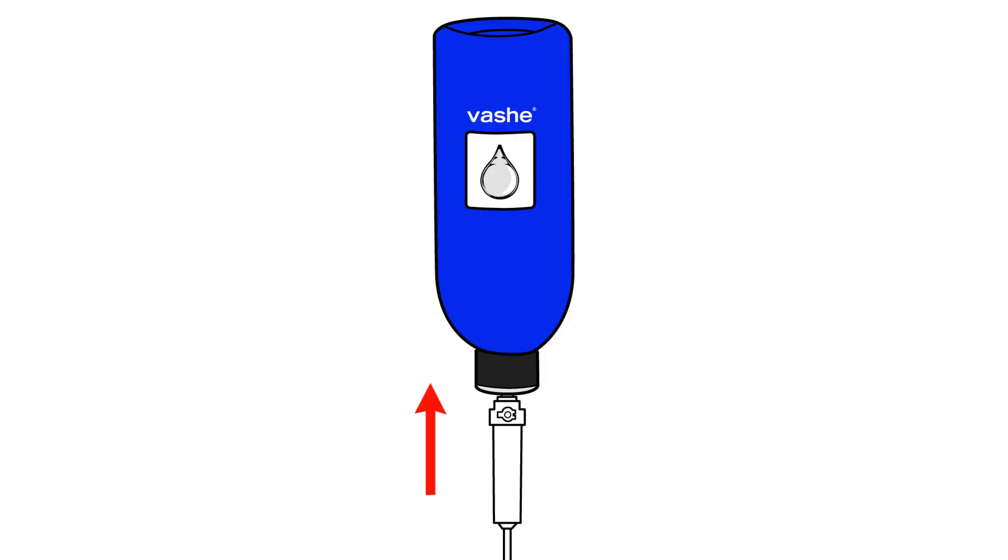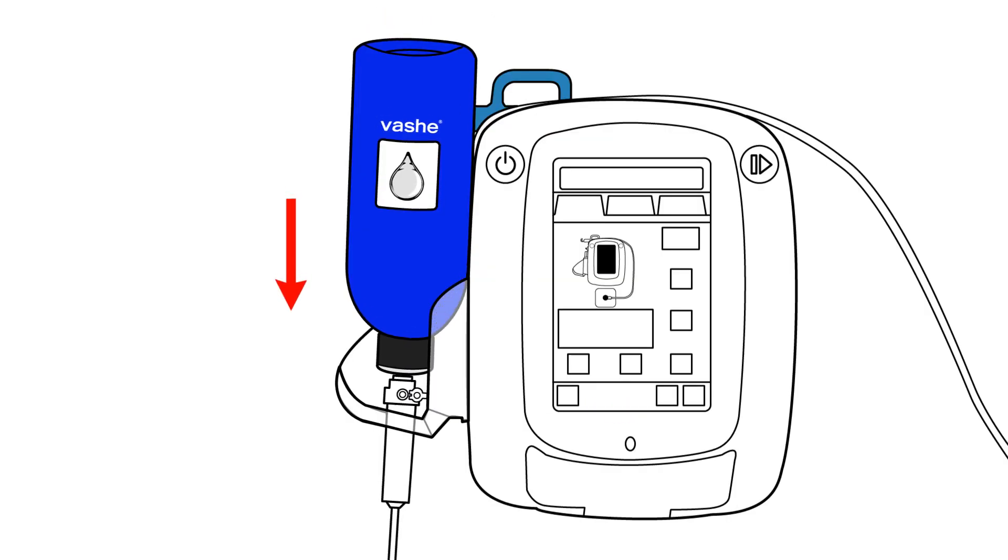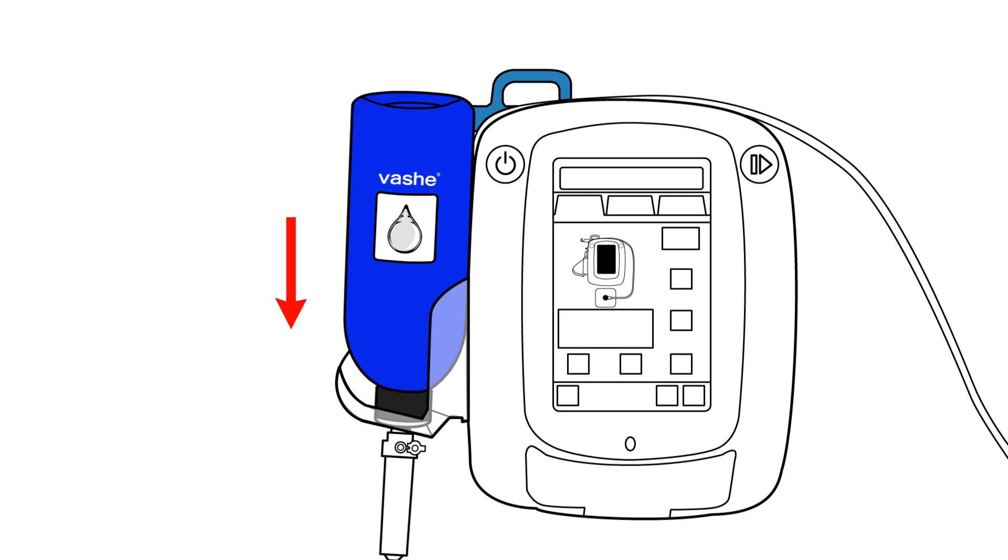Take irrigation tubing and spike Vosh bottle. Open vent to allow airflow. Then place bottle into provided cassette and change as needed.